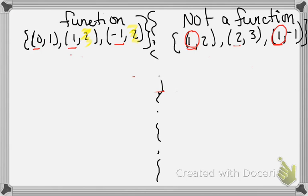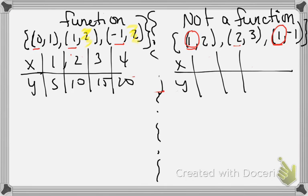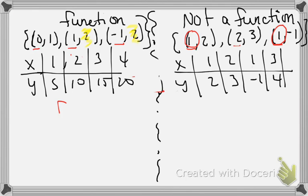Now let's do a table. A table has an x column and a y column. For the function example, I'll put x values 1, 2, 3, 4 and y values 5, 10, 15, 20 — no x values repeat, so this is a function. For the non-function, we could have x values like 1, 2, 1, 3 — you can see the 1 repeats.